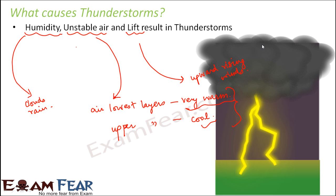Daytime heating of land by the sun causes the lower part of the atmosphere to become very unstable. Unstable means that when air is heated up, the warm air is not stable because it tends to move upward. As the air moves up, along with it water vapor also moves up — that's how cloud formation happens. That cloud leads to rain. Water vapor here acts as a fuel for the thunderstorm, because without water vapor, a thunderstorm cannot happen.